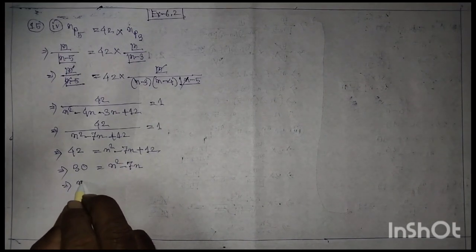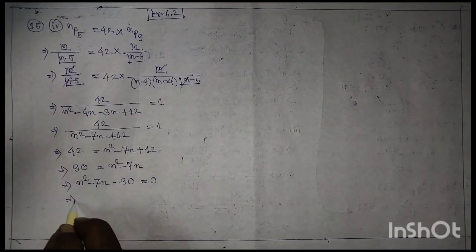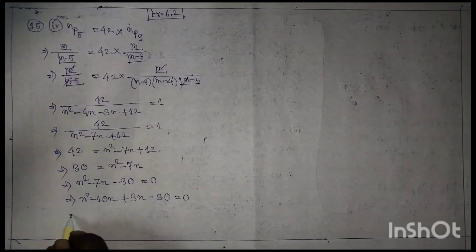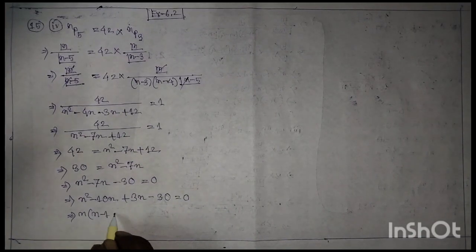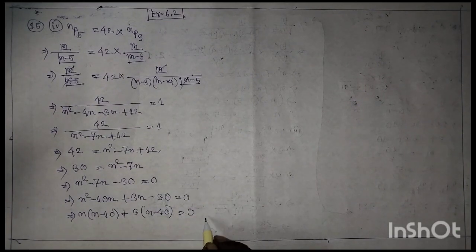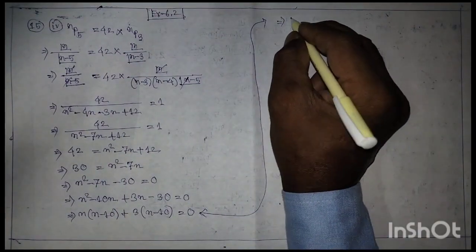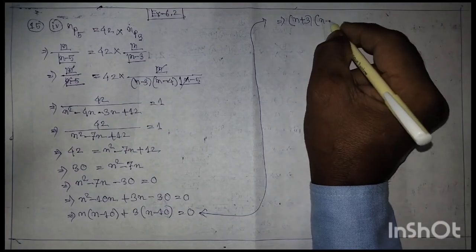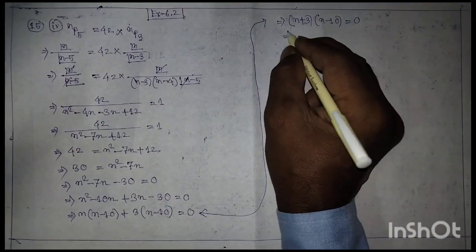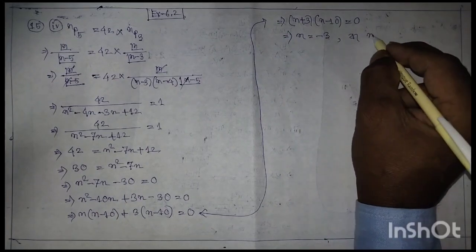And place n² - 7n - 30 is equal to 0. Factoring: n² - 10n + 3n - 30 is equal to 0. And place n(n - 10) + 3(n - 10) is equal to 0. So (n + 3)(n - 10) is equal to 0, giving n = -3 or n = 10. Since n must be positive, n = 10.